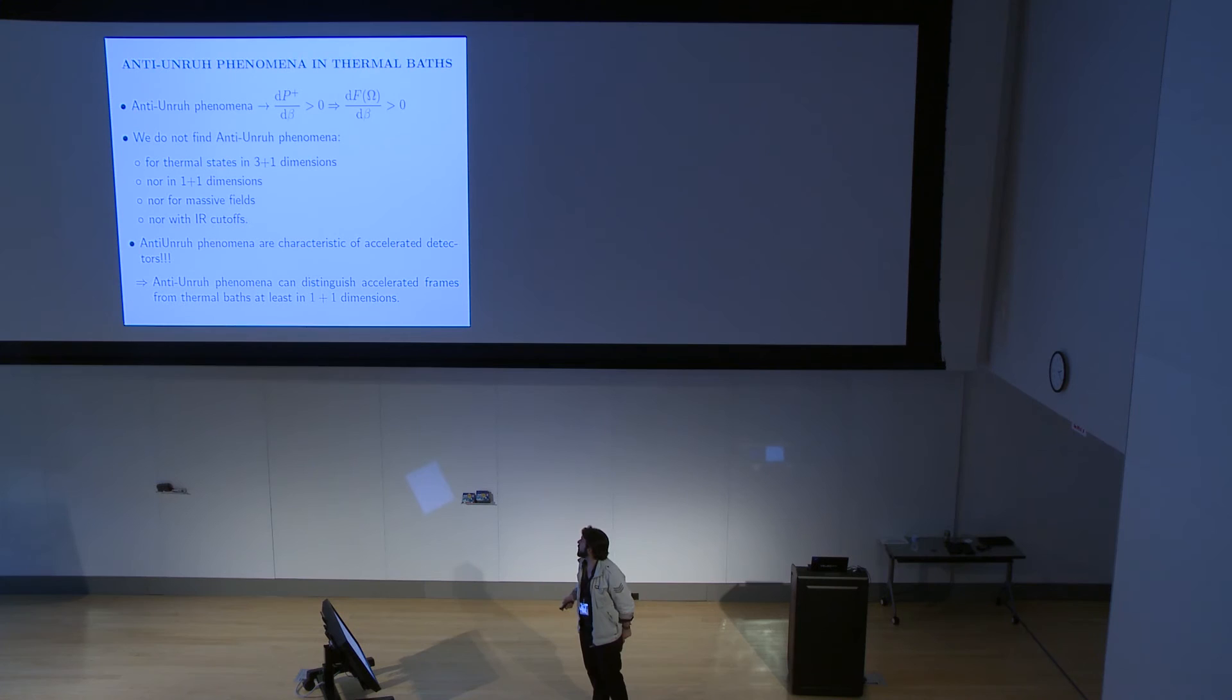What we get is that we do not find this anti-Unruh phenomena, nor for 3 plus 1 dimensions, nor for 1 plus 1 dimensions, nor for massive fields, with any kind of introduction of cut-offs, nor without the introduction of cut-offs.